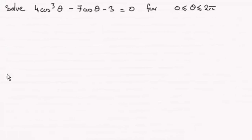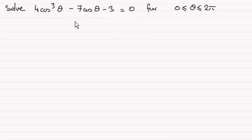Hi there. Now for this question, we're being asked to solve this trigonometric equation, 4 cos cubed theta minus 7 cos theta minus 3 equals 0, for theta between 0 and 2 pi radians, inclusive. And we've got to give the angle theta as an exact angle.